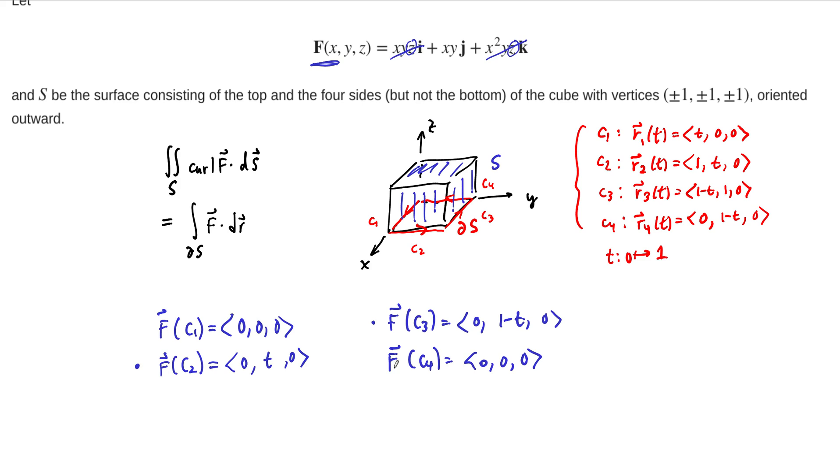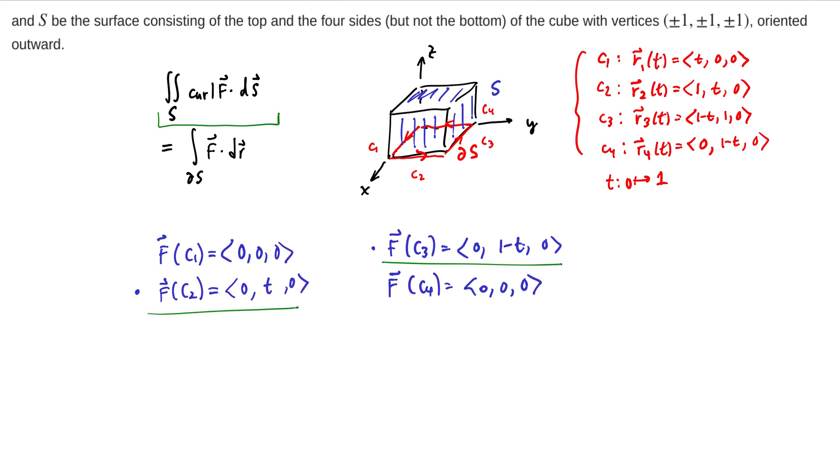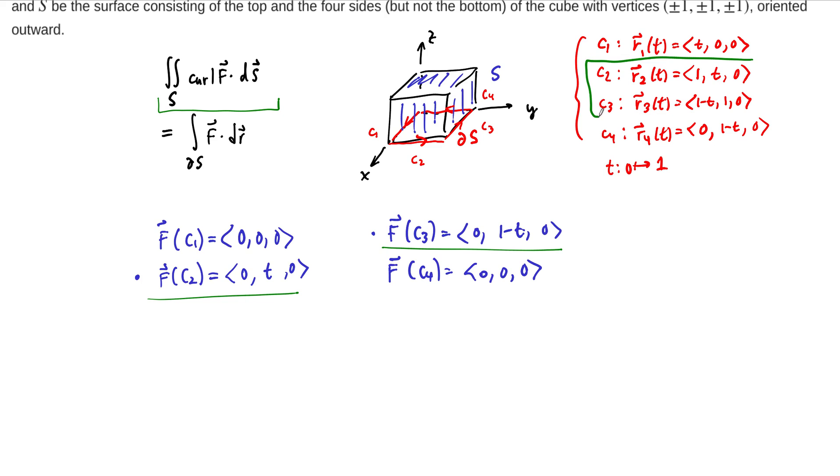So we can reduce this quite a bit. This surface integral that we want to compute can be reduced to the sum of two path integrals along pretty simple straight lines. These are the two parametrizations that we need.